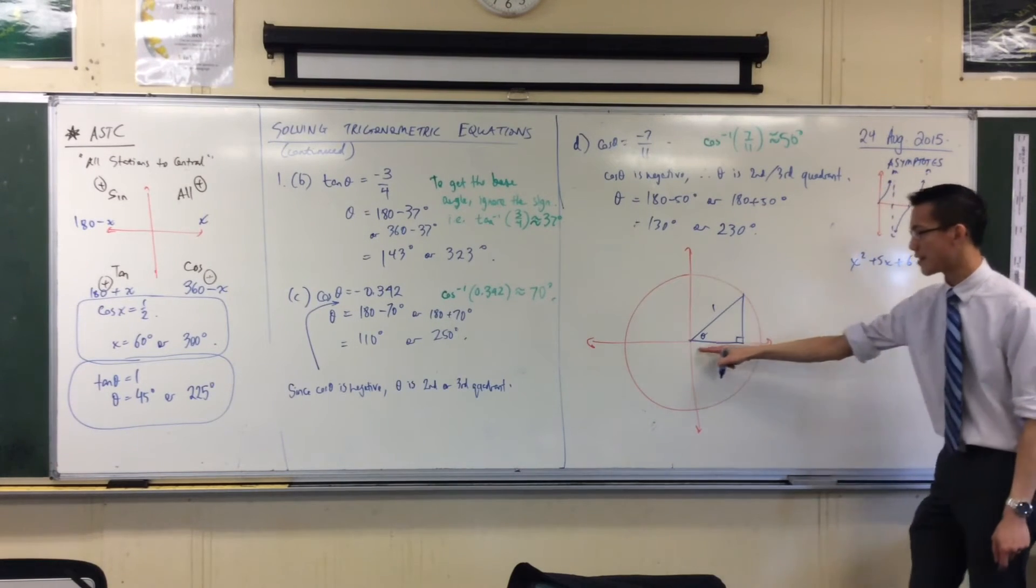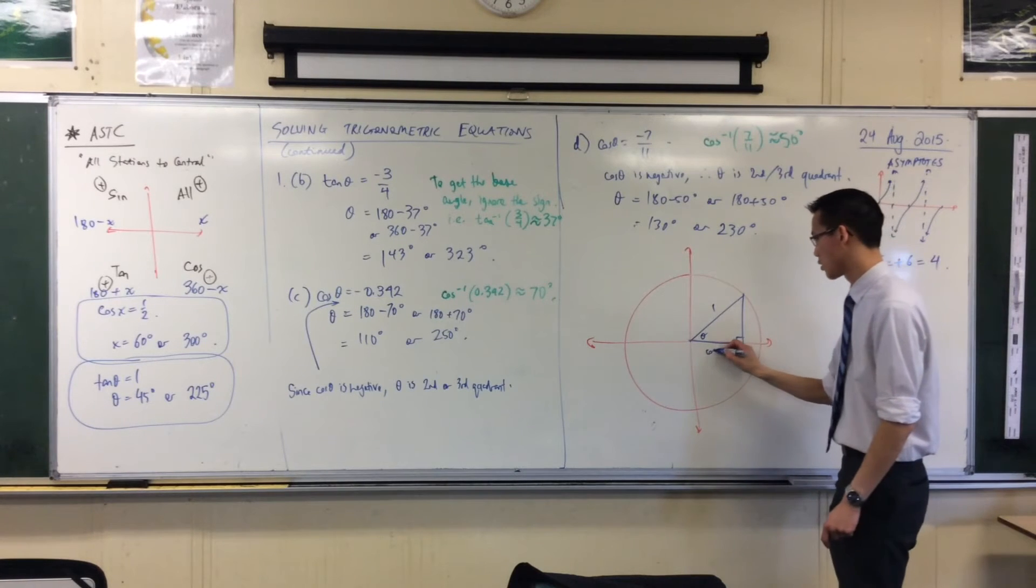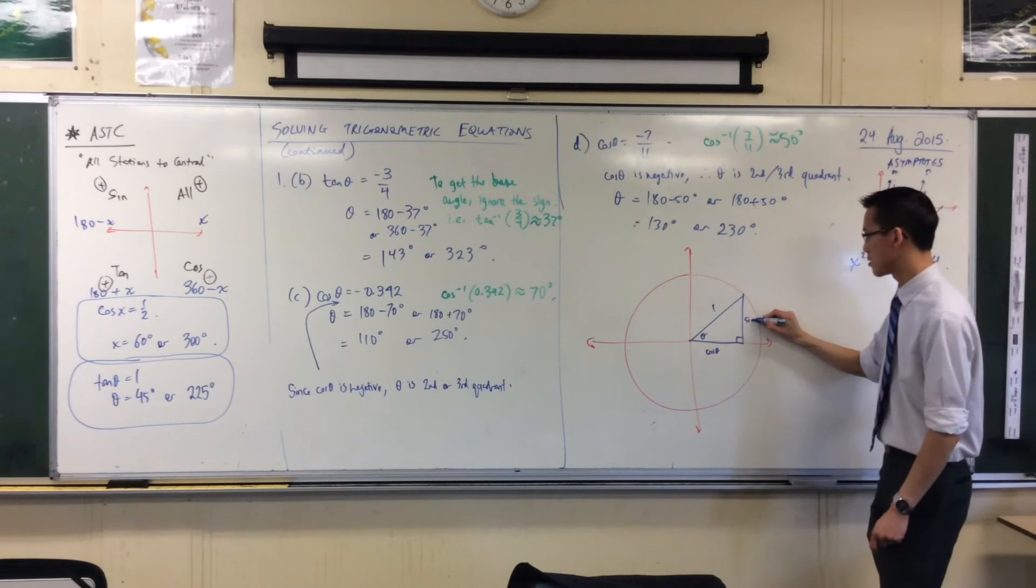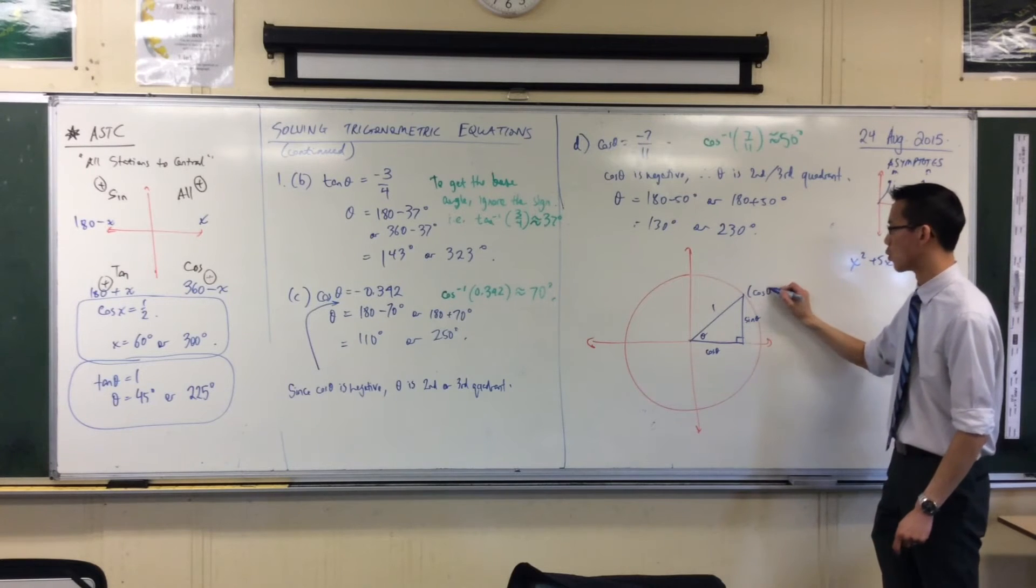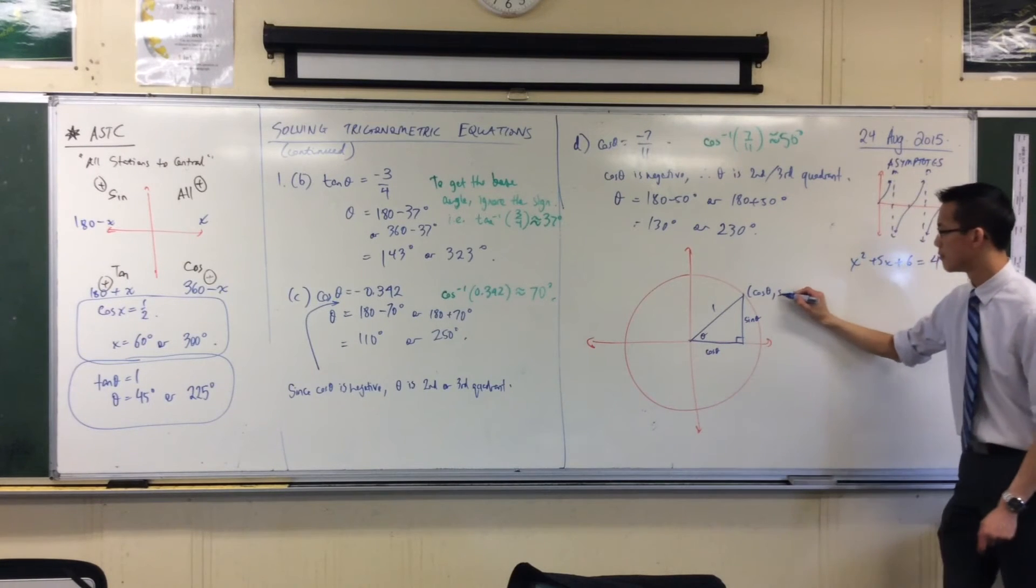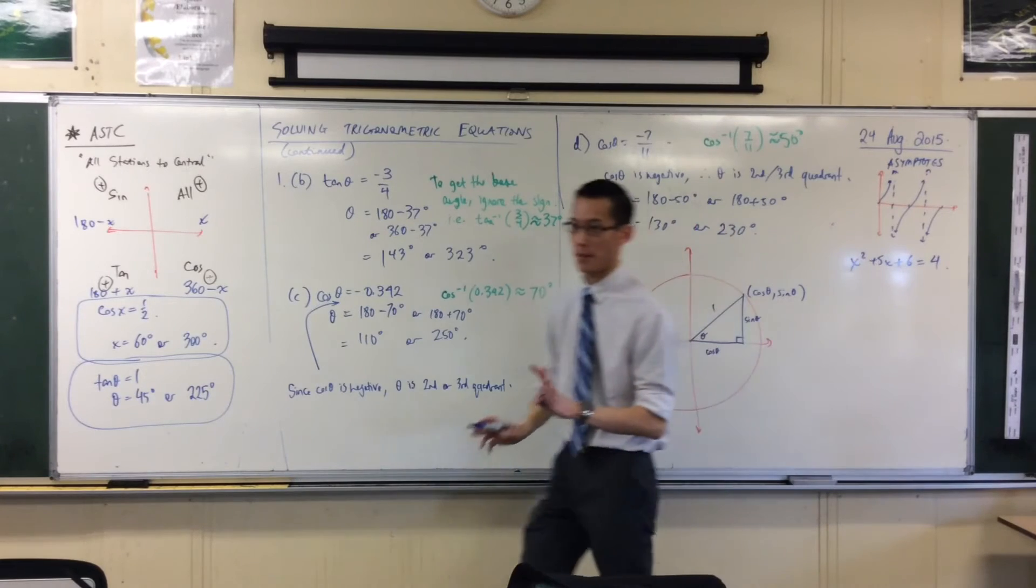And then if you use that as theta, okay, you find out that this distance along here is cos, and this distance up here is sine, and that's where we get these coordinates from. Okay, so, so far, so good. You remember this, right?